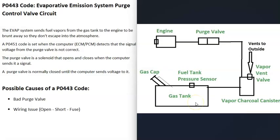These EVAP systems, depending on the vehicle, can be designed differently — the components can be located differently. So if you do go to work on your vehicle, be sure to get a diagram for your specific vehicle. Basically, the way these systems work is that the gas vapors leave the gas tank, go through a hose over to what's called a vapor charcoal canister, which is kind of like storage for the gas vapors. Located on or near the charcoal canister is what's called a vent valve.